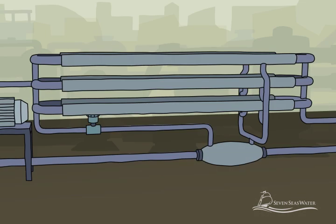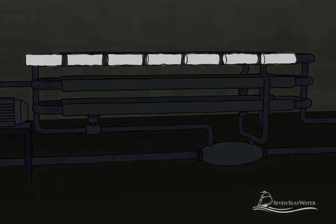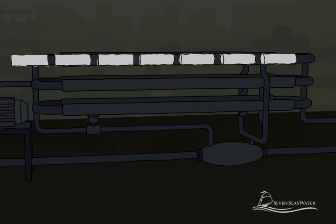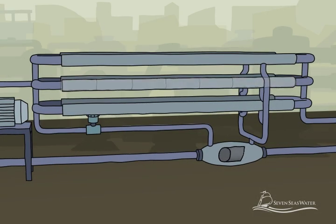The reverse osmosis membranes are then enclosed in a fiberglass shell. The membranes are connected end-to-end, usually six to seven membranes together, and housed in vessels that are built to withstand pressures up to 1,200 psi.